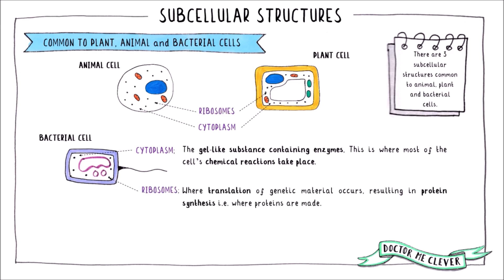Ribosomes, represented here by the little black dots, are where translation of genetic material takes place. This is where the genetic code is translated into amino acids that make up proteins. Therefore, ribosomes are the site of protein synthesis.